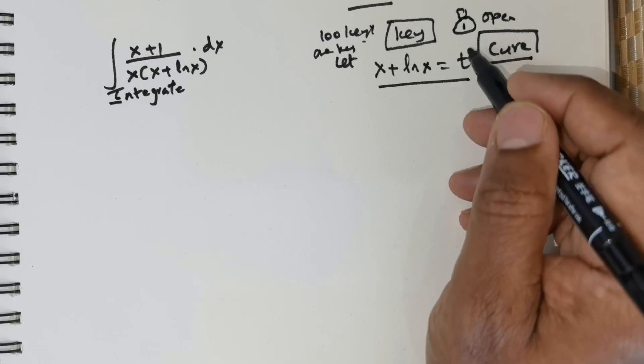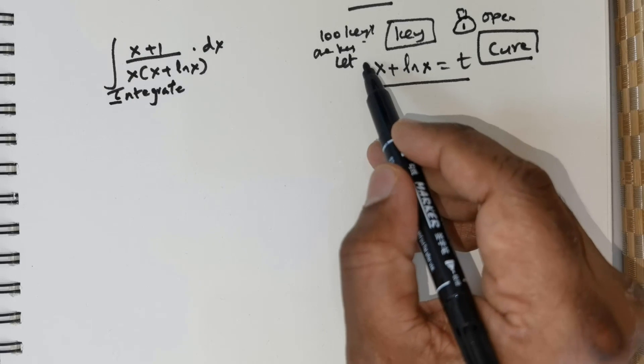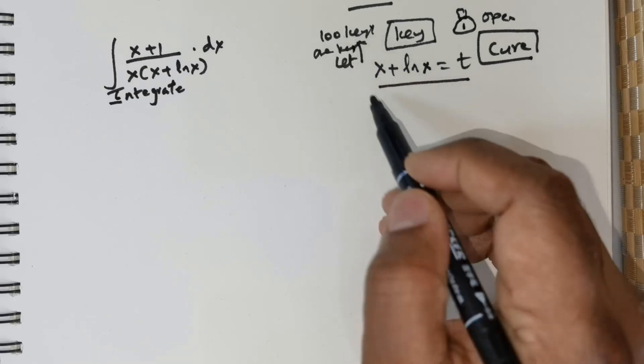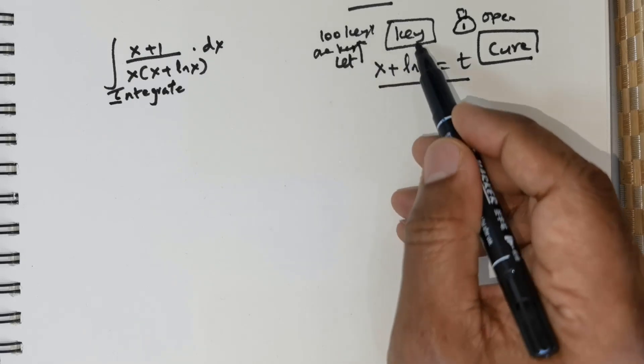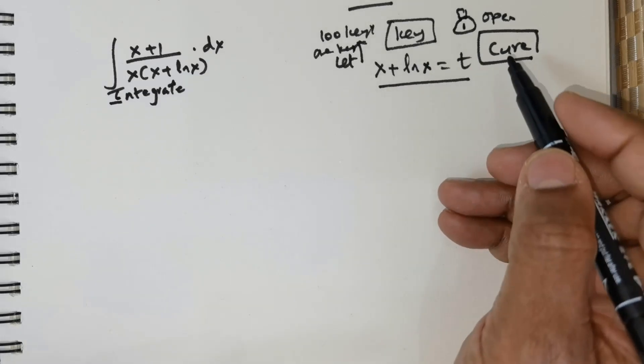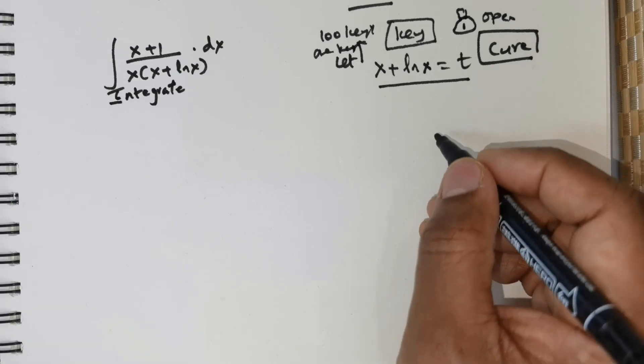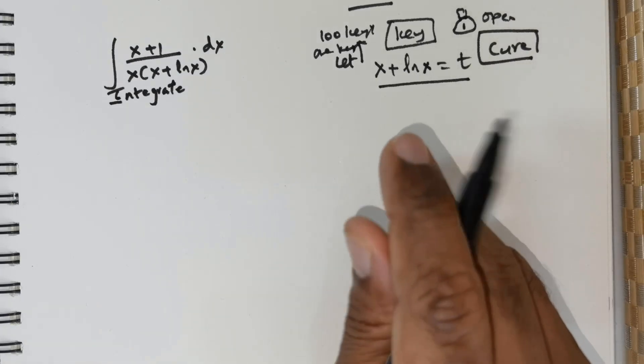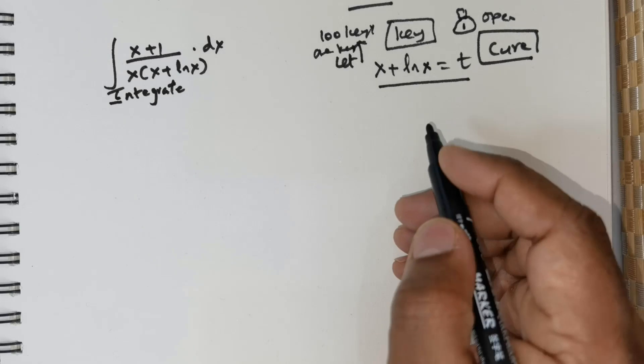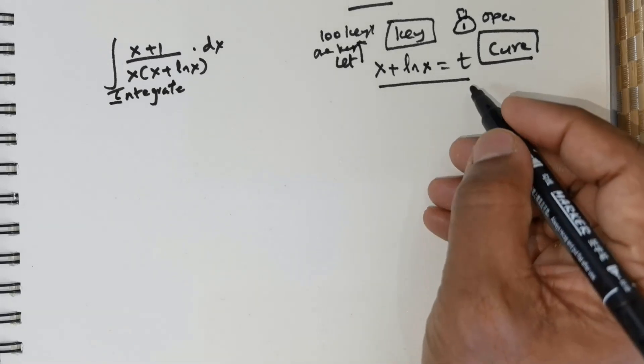And as an individual who is specializing in problem solving, you should be able to get that key. Now in this case, the key is x + ln x = t. So I'm just giving a simple illustration why solving problems is the utmost thing that everybody should involve themselves with and develop themselves. So having mentioned that, let me move on.